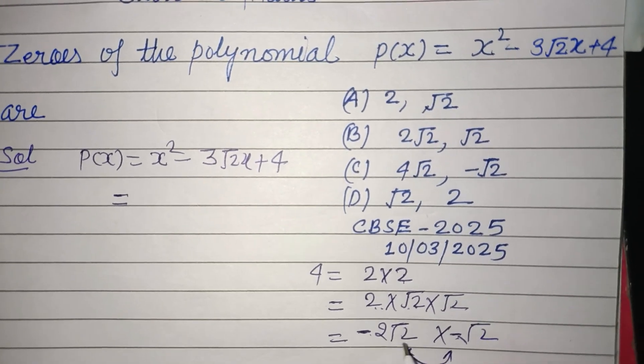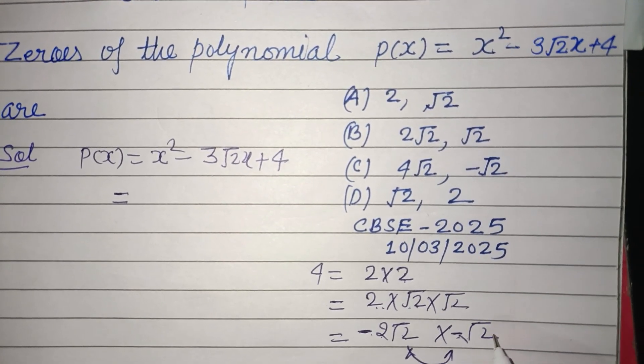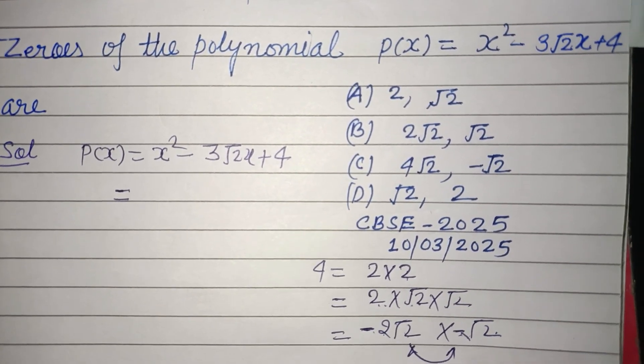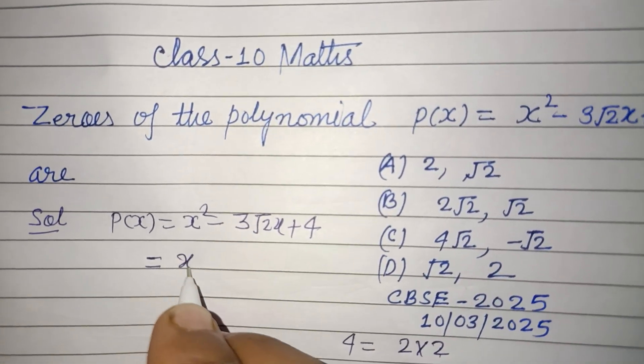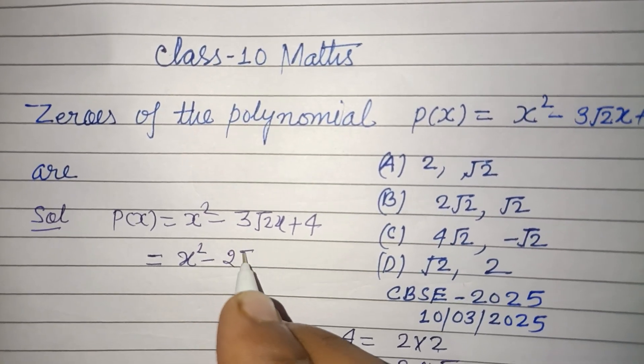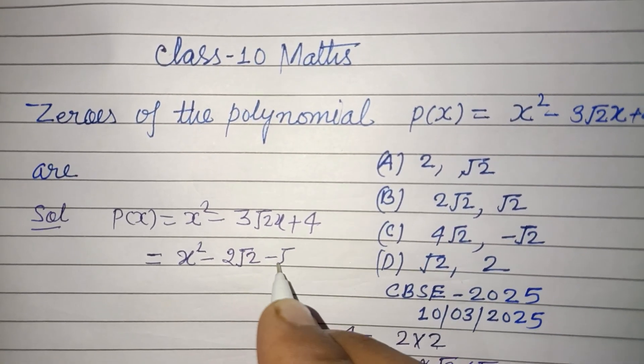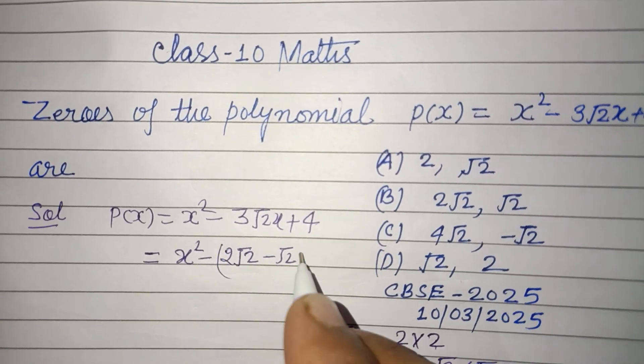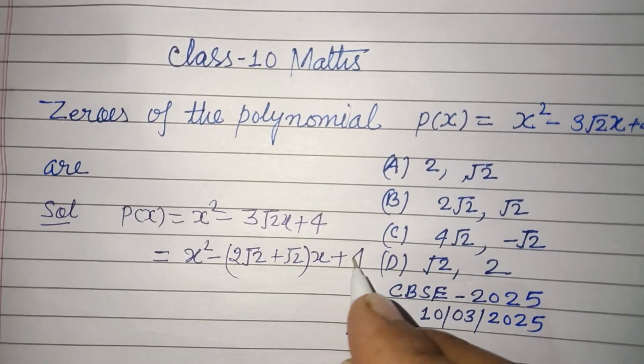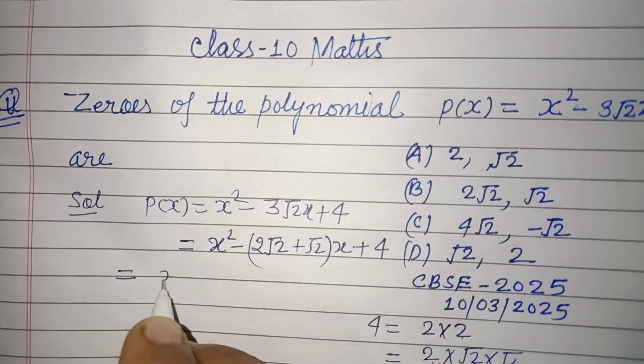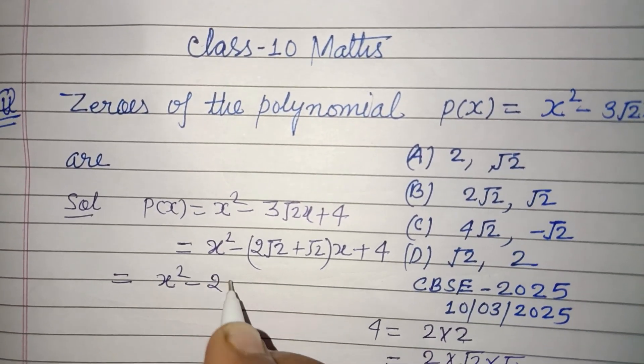So we can easily break this: x² minus 2√2 minus √2 into x plus 4. x² minus 2√2x minus √2x plus 4.